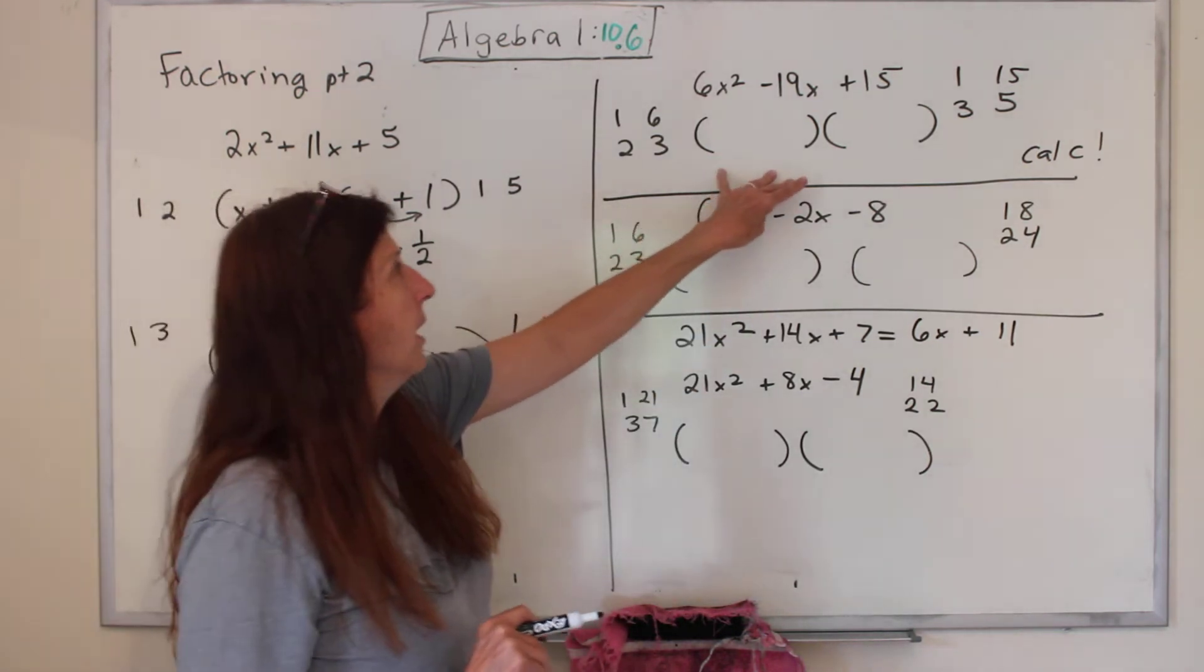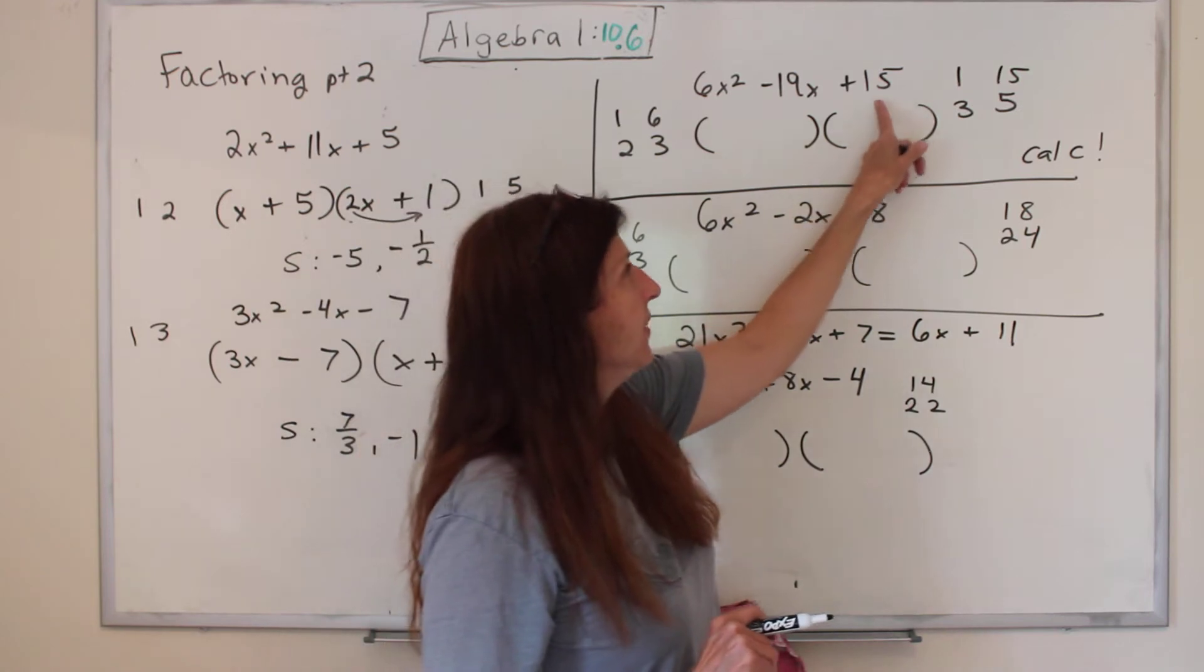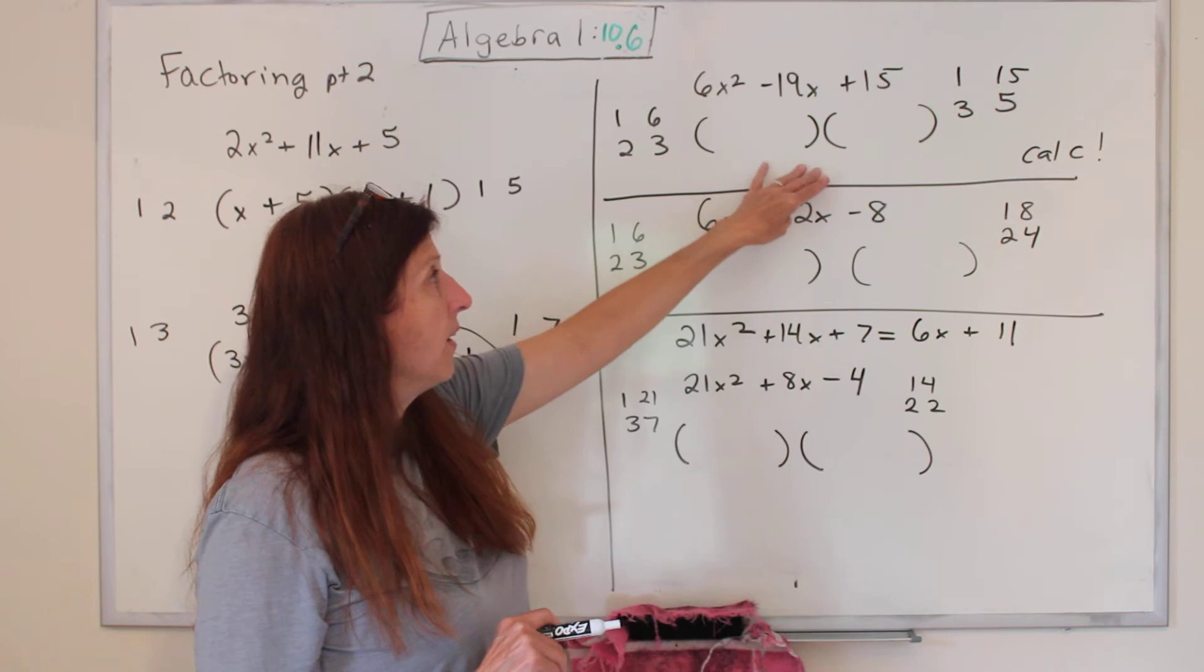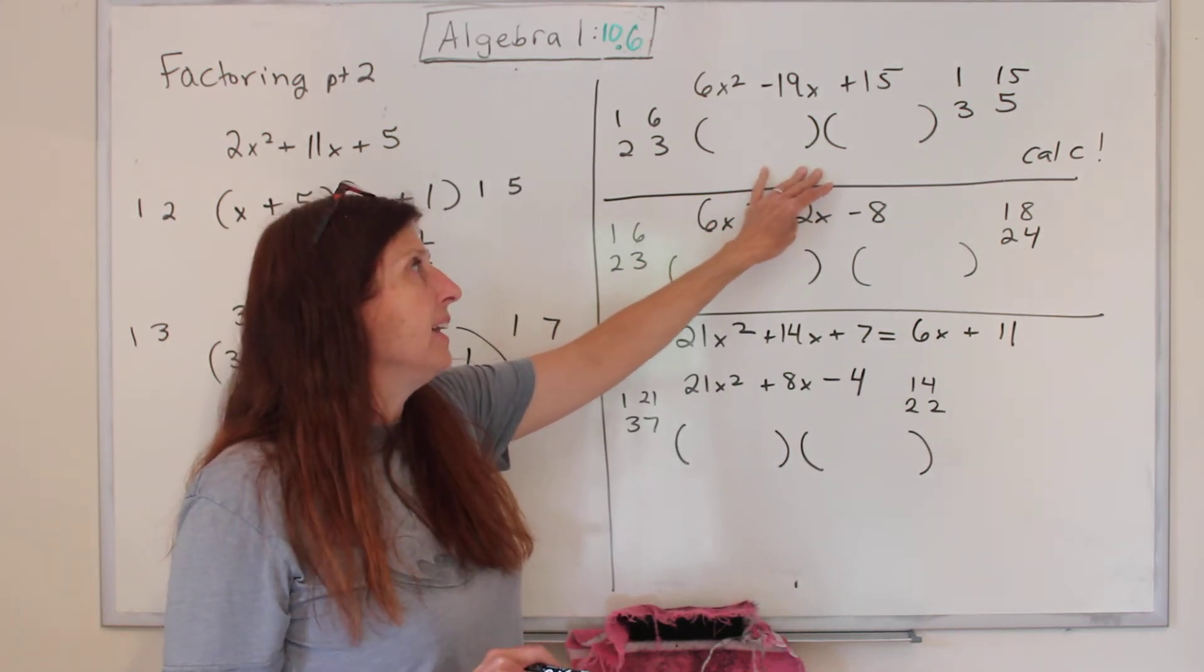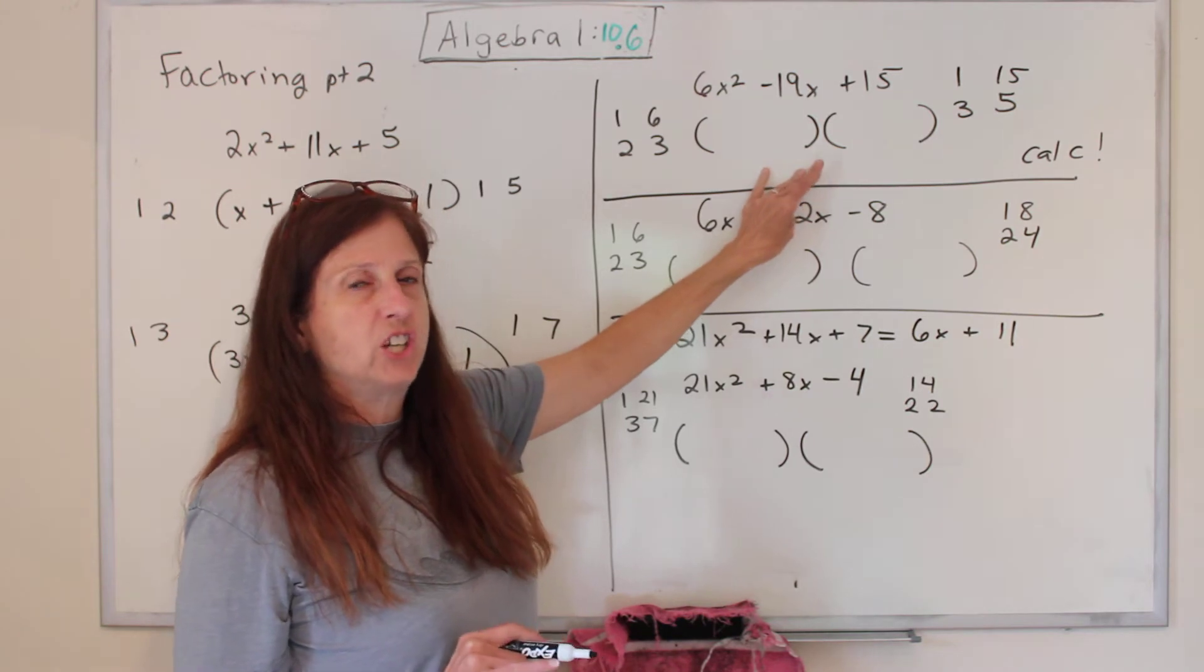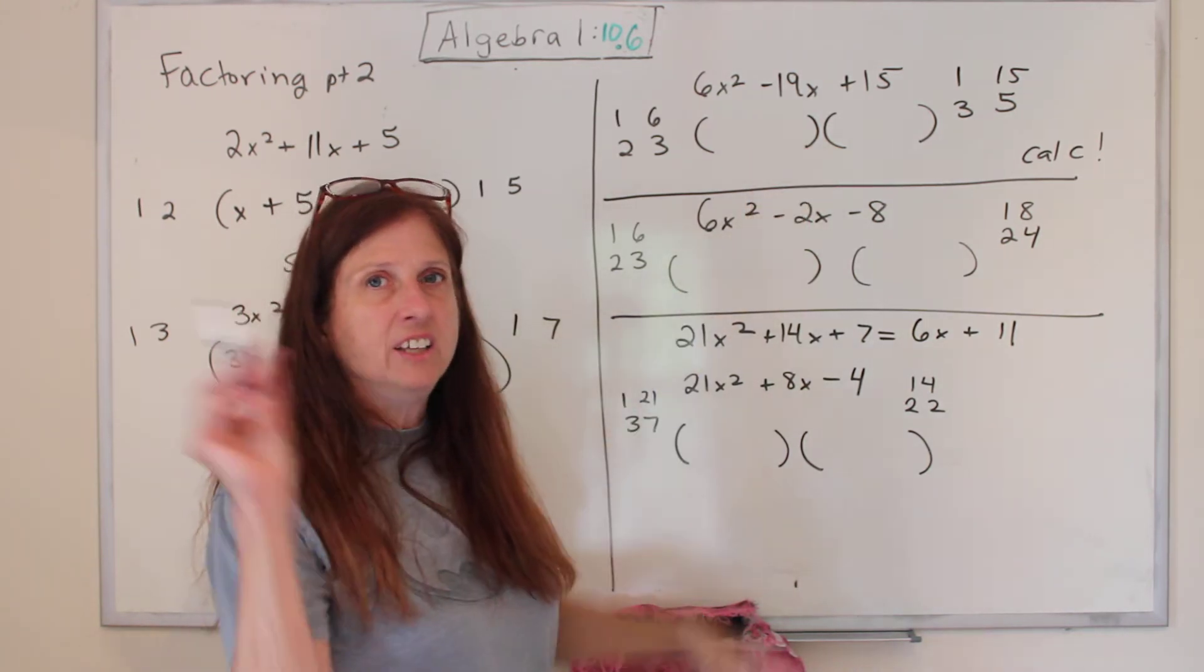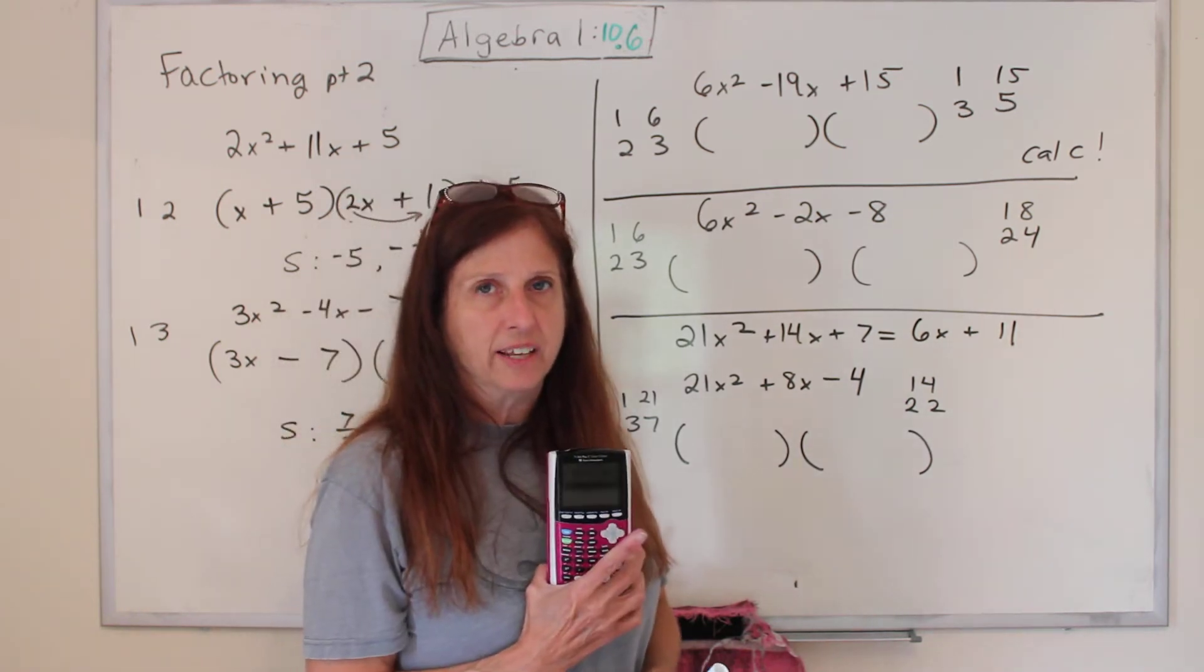What about this one? This one, the factors of 6 are 1 and 6, 2 and 3. The factors of 15 are 1 and 15, 3 and 5. If you put out all the combinations, there's 8. Back in 1987, we would just chug through all of those until we found the right answer. Y'all don't do that anymore. Now you've got your best friend, your graphing calculator.